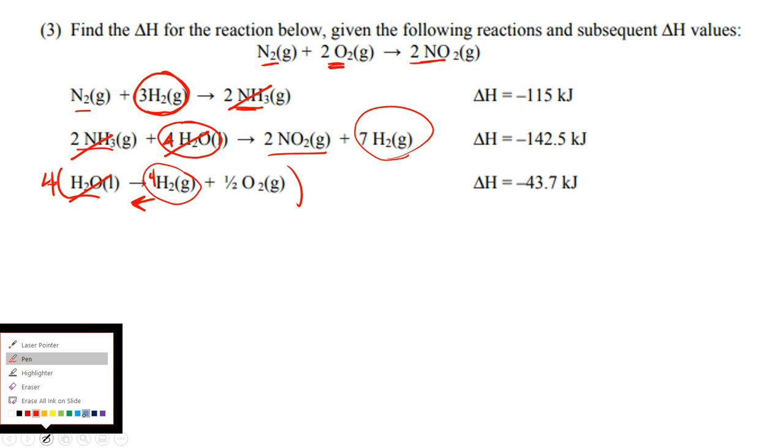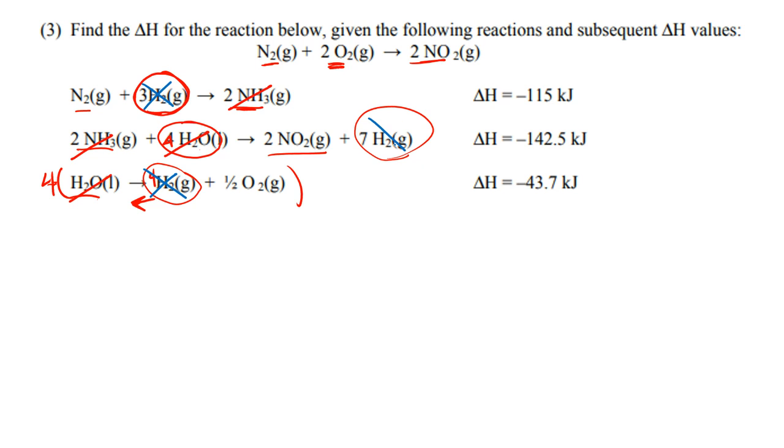So these guys, four and three make seven, cancel out those seven. Four times a half is two. Since I reversed the reaction, four times a half is two oxygens are now in my reactants. We're all golden.